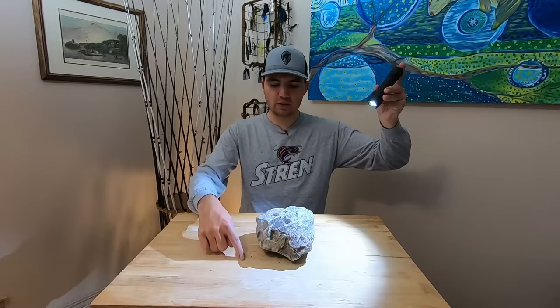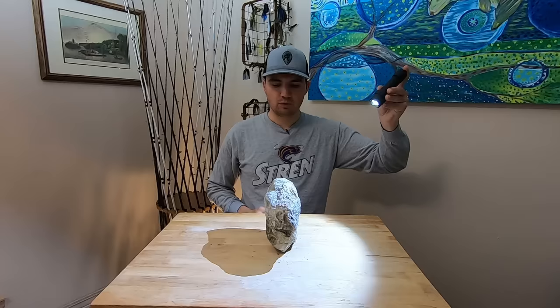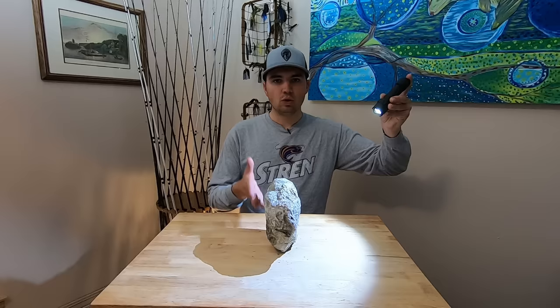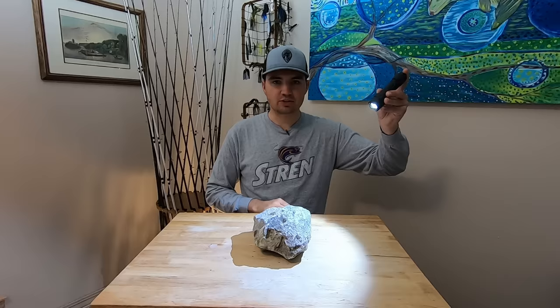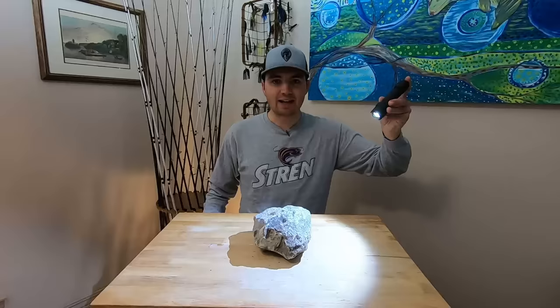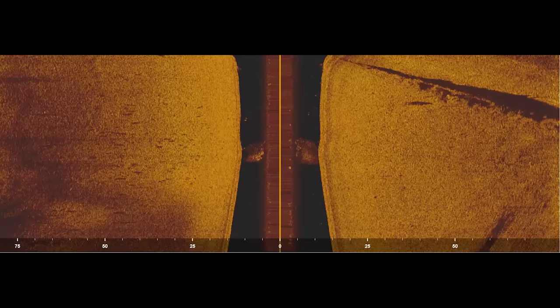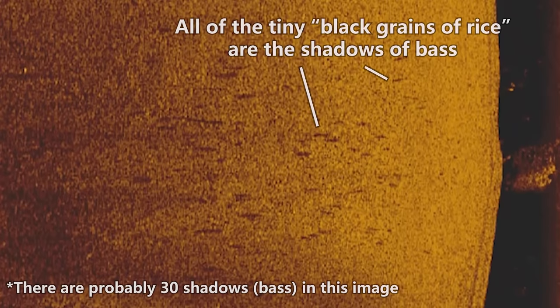The shadow from a bass lying on the bottom is not very long — unlike when the rock is tall, where the shadow is much longer. Since a bass is not that tall, the shadow is going to be a lot thinner and smaller. I equate the shadows cast by a bass to small grains of rice. When seeing bass on your graph, they're going to look like small black grains of rice — most of the time you're actually seeing just the shadow of the fish cast by the transducer's beam.